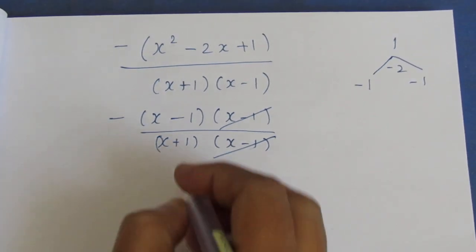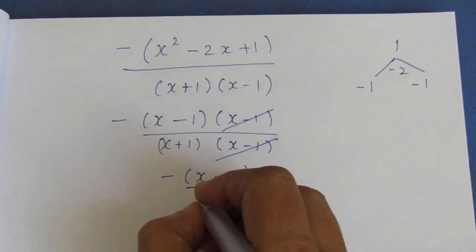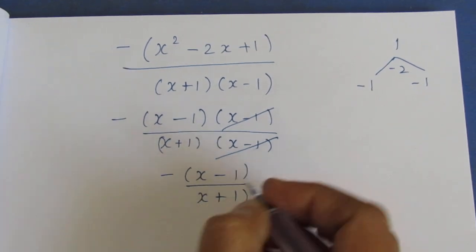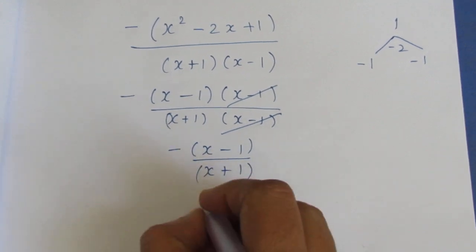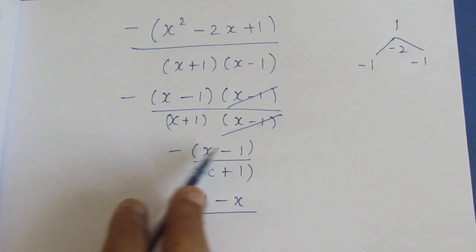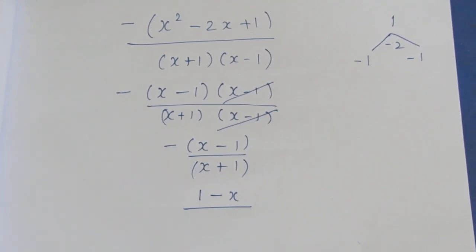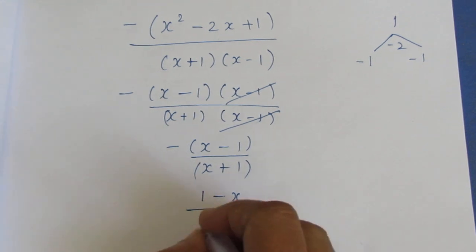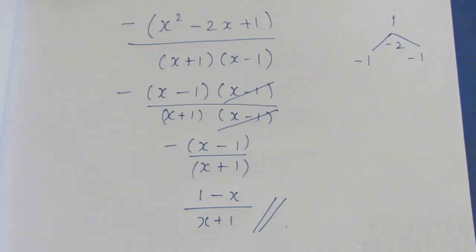We balance: minus of x minus 1 by x minus 1. The minus sign means 1 minus x. Minus sign equals minus x, plus 1 is minus x. Plus 3 equals 3. This is our final answer. This is our second submission. Thank you.